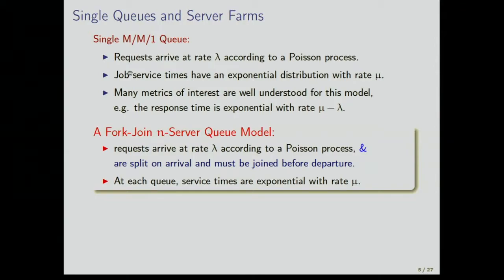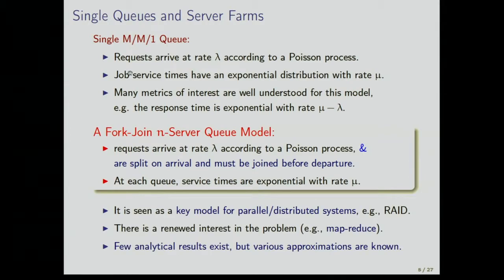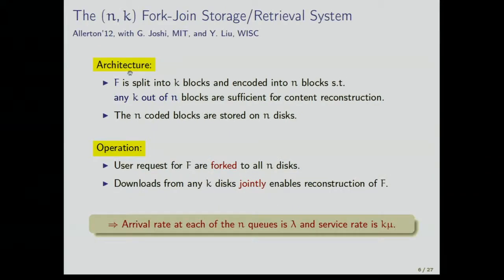In the fork-join model, requests arrive at rate lambda according to a Poisson process but are split on arrival and must be joined at departure. A common analogy: four family members arrive at a supermarket — mother buys milk, father buys bread, kids get candy — but they all have to return to the same car. This is seen as a key model for parallel distributed computing like MapReduce. It was introduced in the 70s and 80s and is now of renewed interest; few analytical results exist but various approximations are better known.